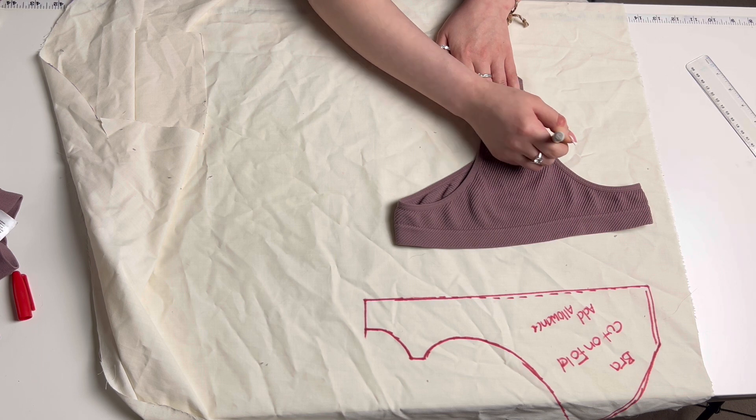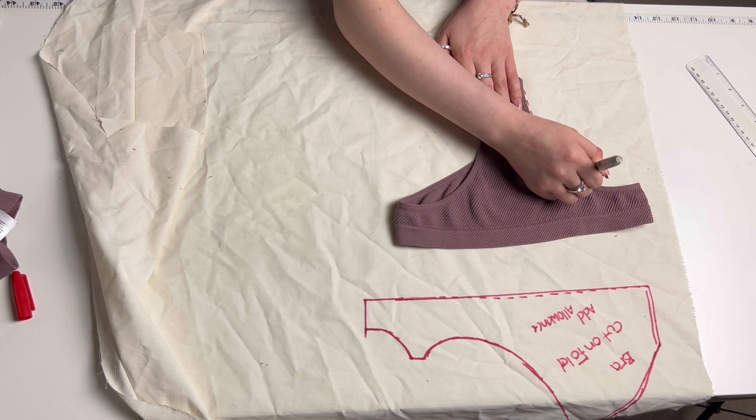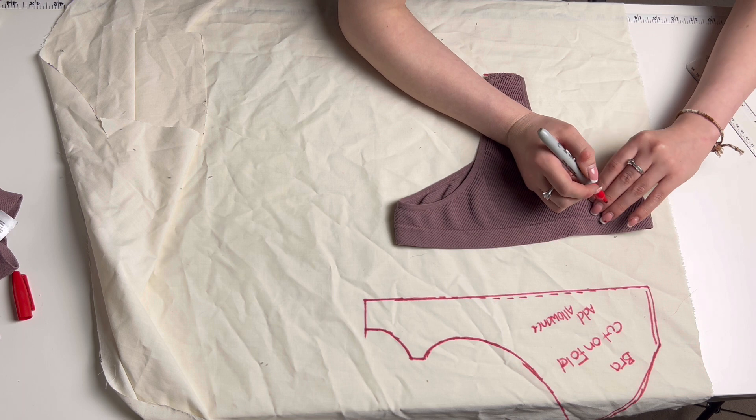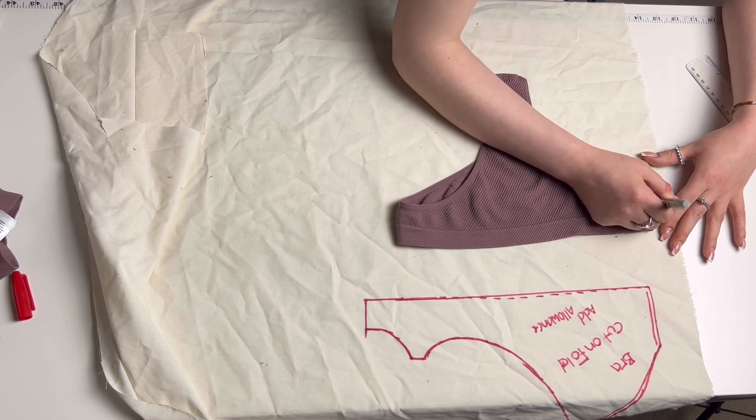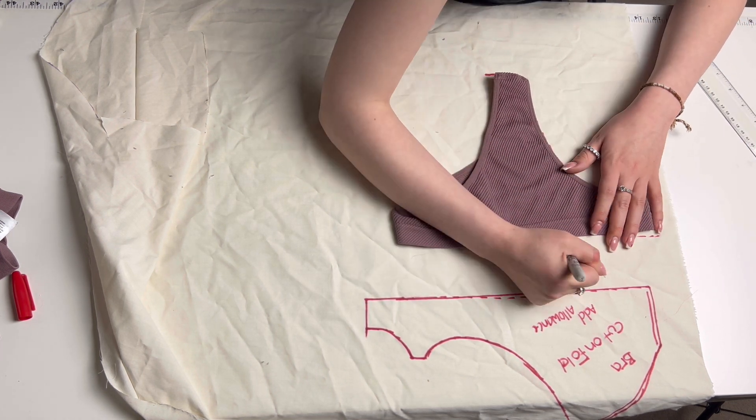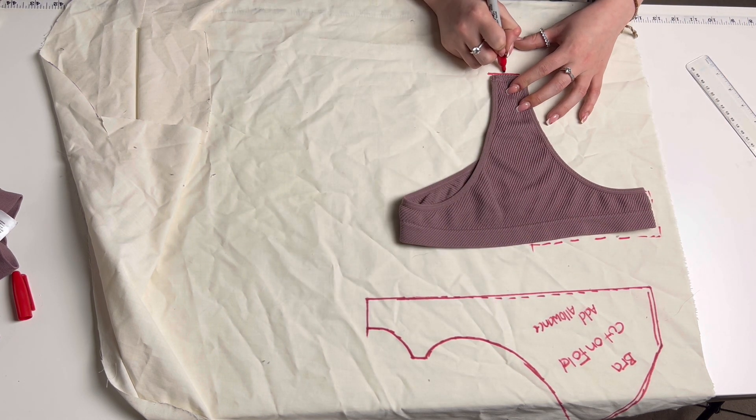Once your pants are laying flat, you want to start tracing round to make the front piece of our pants. Again, we're making a pattern of half of the pants so that when we cut it out on our proper fabric, we can cut it out on a fold.